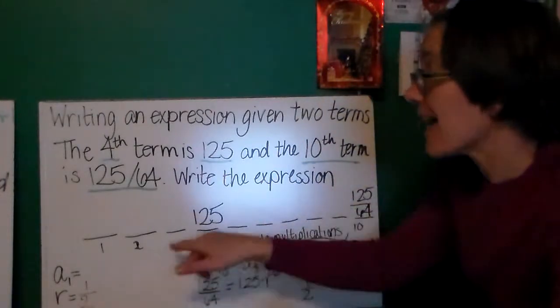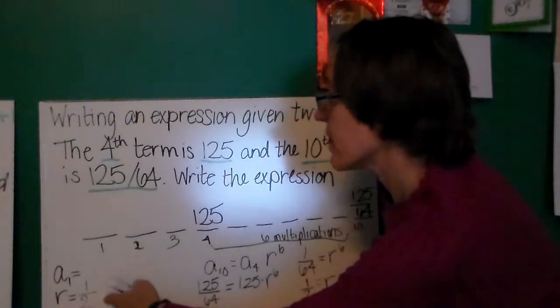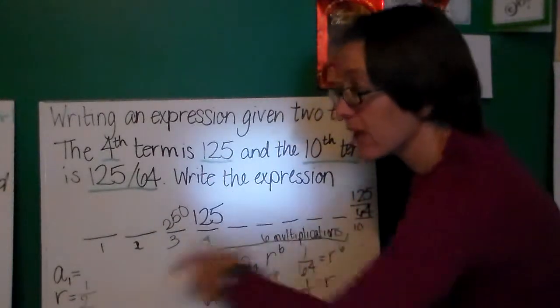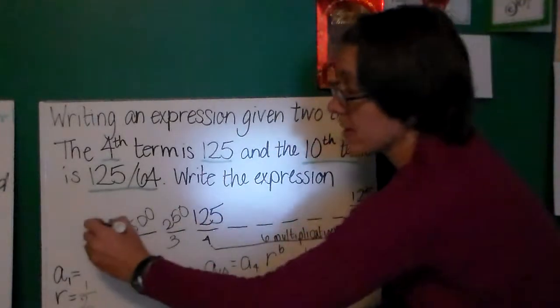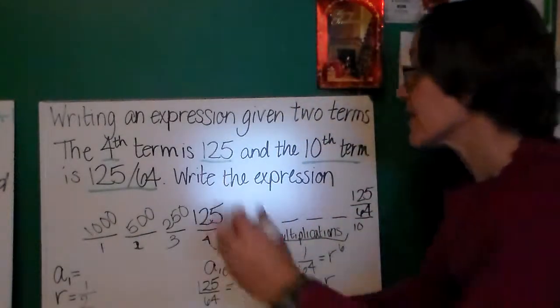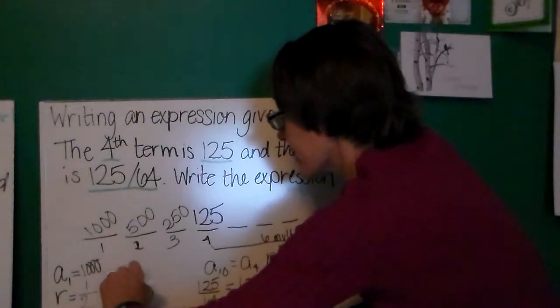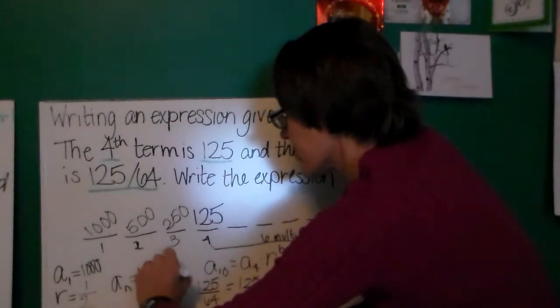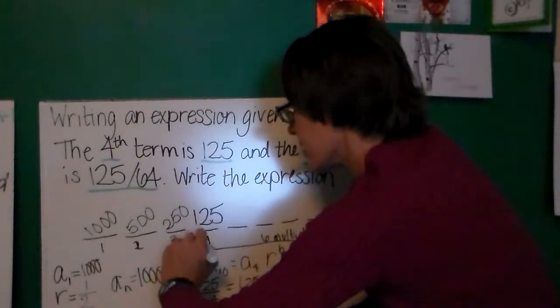So, I think to myself, okay, what times 1 half would be 125? Well, that means term 3 is 250. What times 1 half would be 250? That means term 2 is 500. And similarly, must have started with 1,000. So, that tells me that my final answer is going to be a_n equals 1,000 times 1 half to the n minus 1 power.